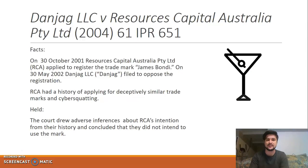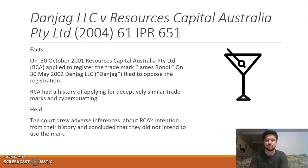A case where it did succeed is Danjag LLC and Resources Capital Australia Proprietary Limited. Resources Capital applied to register the trademark 'James Bondy', and Danjag, who owned the trademark 'James Bond', filed to oppose the registration. Resources Capital had a history of applying for deceptively similar trademarks, and a history of cyber-squatting on domain names to sell them back to the more legitimate owner.